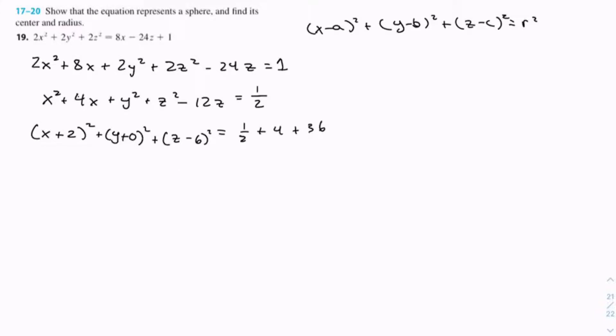Alright, let's now simplify the right side. We have 1/2 plus 4 plus 36, which equals 40.5, which equals 81/2.